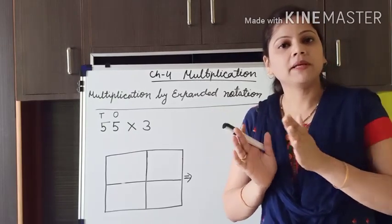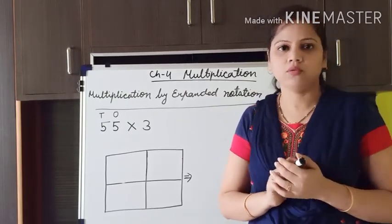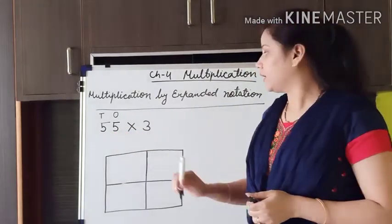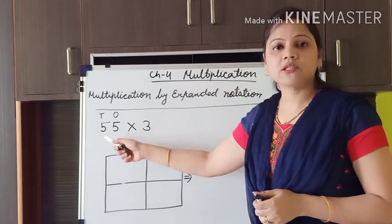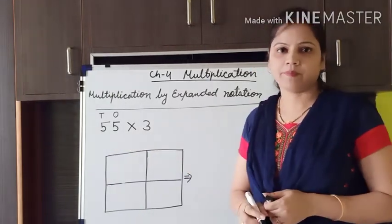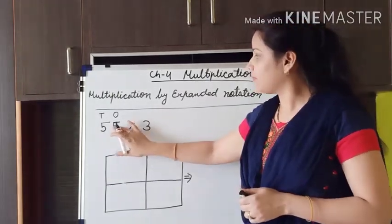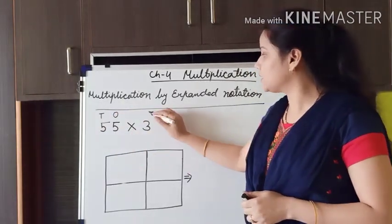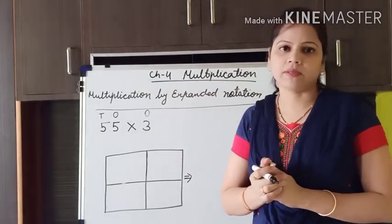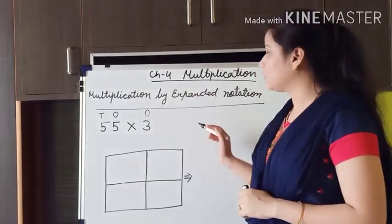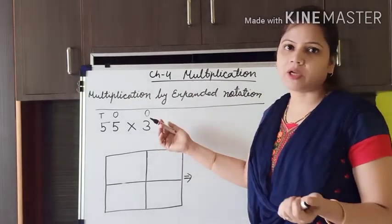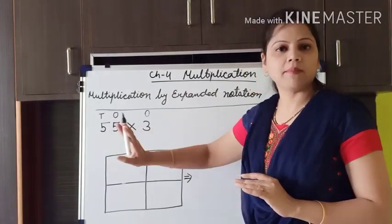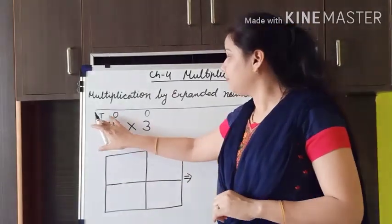Here I have taken a 2-digit number and we are going to multiply this 2-digit number by a 1-digit number. This 2-digit number has ones and tens place, and this 1-digit number is only having ones place. We cannot break this 1-digit number, but we can break this 2-digit number — 55. How? By the places.